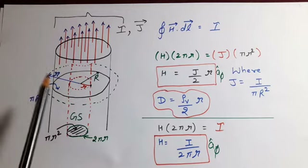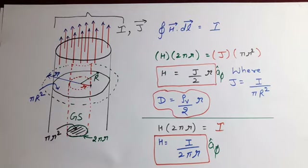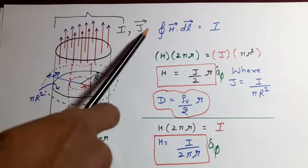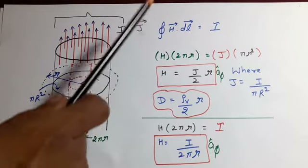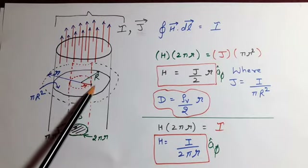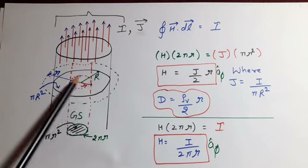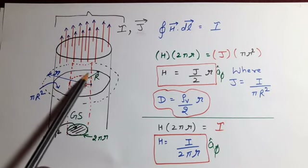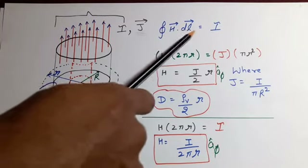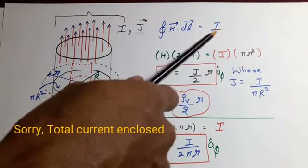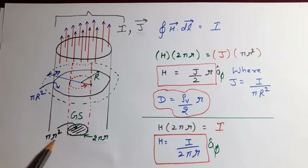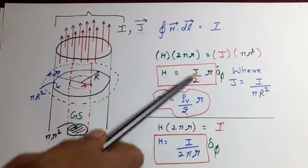We take the first case: magnetic flux density inside and outside a current carrying cylinder. Suppose this is a solid current carrying cylinder with radius capital R and current density J. To find the field at a distance small r where small r is less than capital R, we draw an Amperian surface — a cylinder of radius small r — where B is the same at every point. Then H into total enclosed length 2 pi r equals total current enclosed, which is J times pi r-square. From here H equals J divided by 2 times small r.